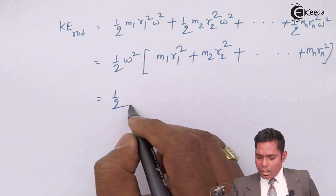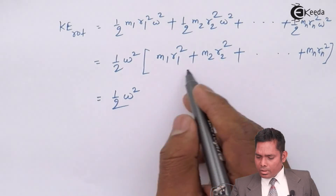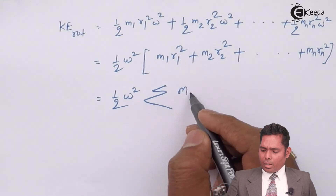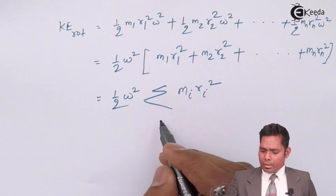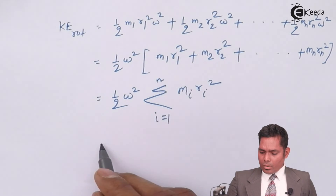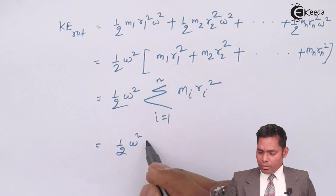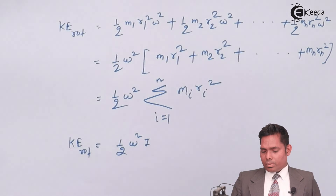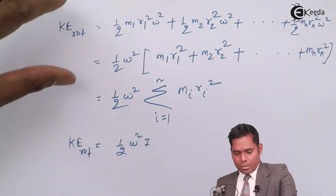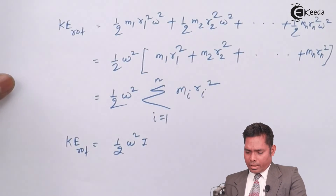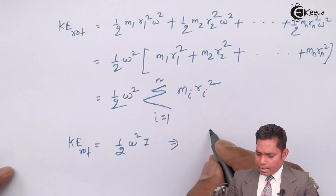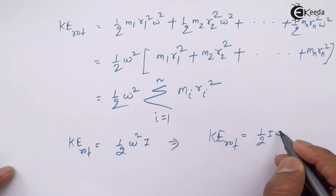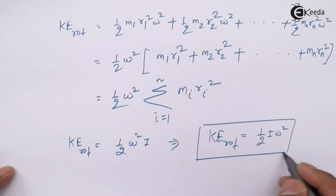This gives ½ω² multiplied by the summation of mᵢrᵢ² for i from 1 to n, which is nothing but the moment of inertia I. So the expression becomes ½ω²·I, which means the rotational kinetic energy equals ½Iω². This is the final expression.